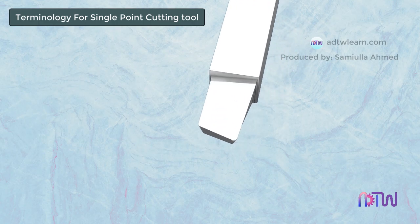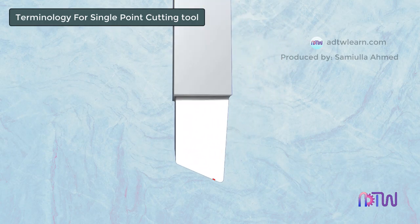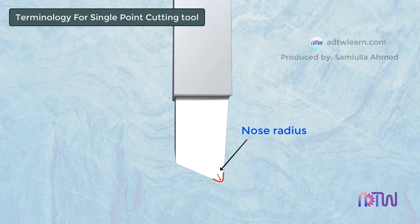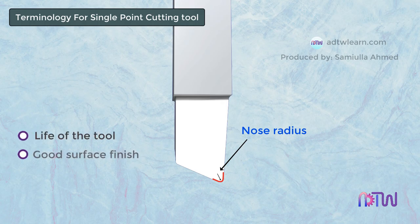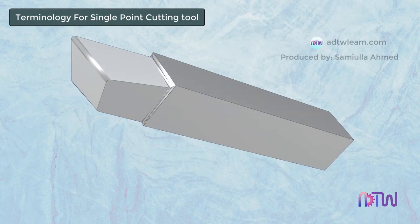The radius of this curvature is called the nose radius. Nose radius helps in increasing the life of the tool and it also provides a good surface finish. The curved portion at the bottom of the tool where the intersection of the flank and base of the tool takes place is called the heel.